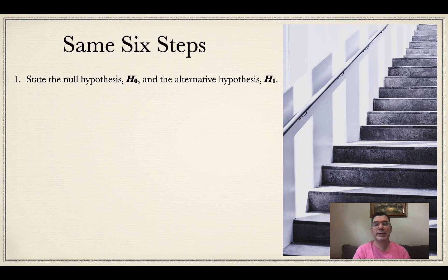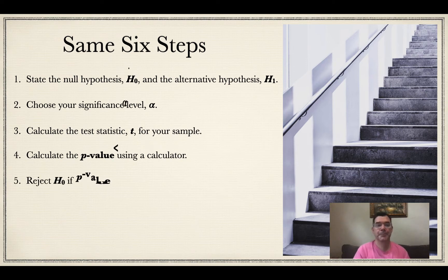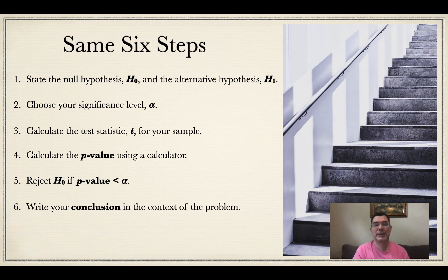So the six steps are exactly the same as if we just had one sample. We're going to state the null hypothesis and the alternative hypothesis. We're going to choose our significance level. We're going to calculate the test statistic t, or we're going to let the calculator do that for us. We are going to calculate a p-value using the calculator, and if I find that my p-value is less than my alpha, I am going to reject H0, my null hypothesis, and whether I accept that null hypothesis or not, I am going to write my conclusion in the context of the problem.